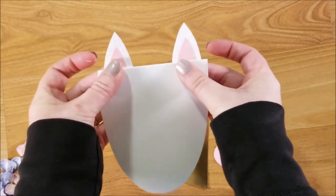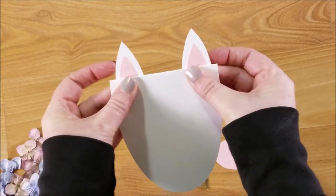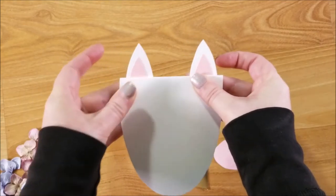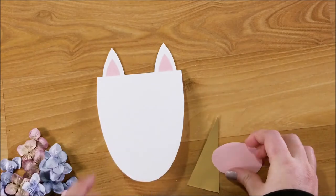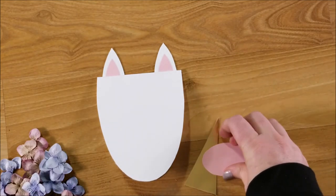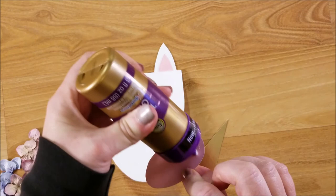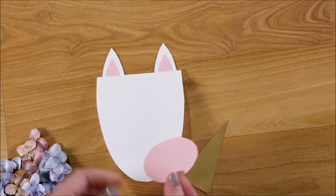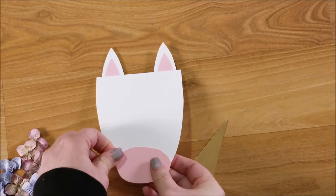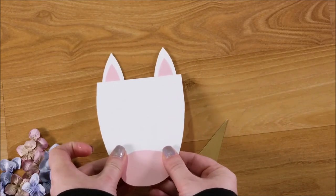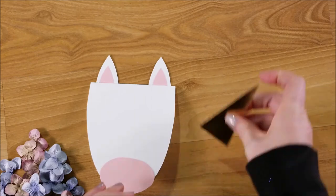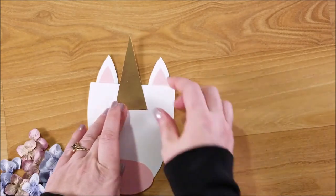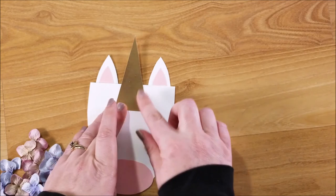The muzzle, you're going to glue at the bottom. And then the horn, you're going to glue towards the top, in the center there.